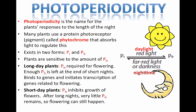Hopefully that made sense. This is a very small part of the syllabus, but it's one of the most confusing things students come across. You should equate daylight with red and nighttime with far red, and then PR and PFR. Remember that PFR is the active form, and it either acts as a promoter in long day plants for flowering, or an inhibitor in short day plants of flowering. Good luck.